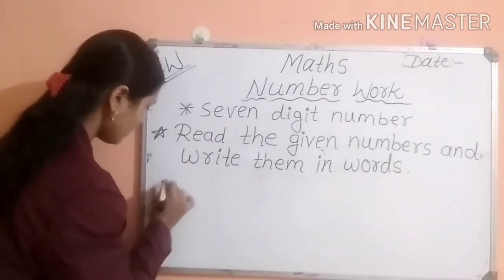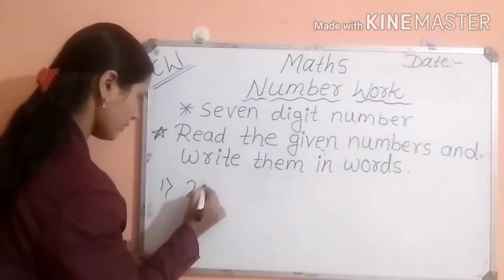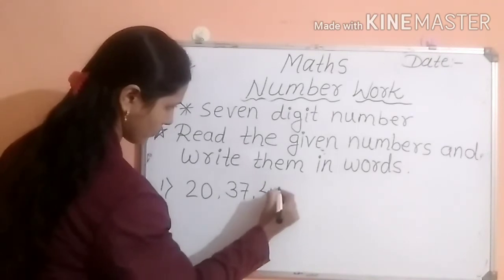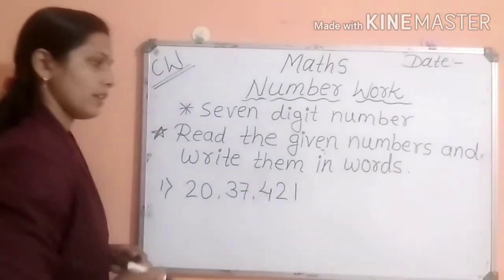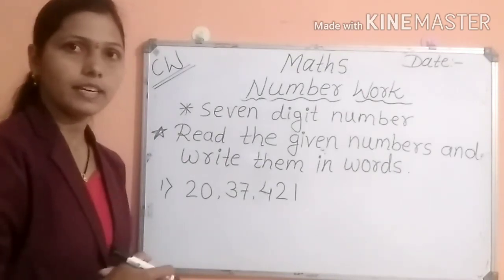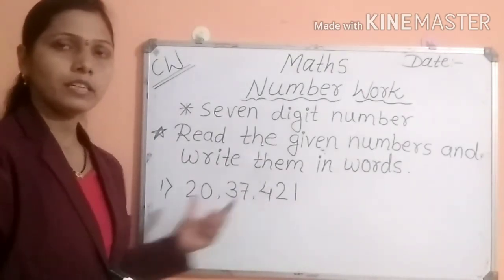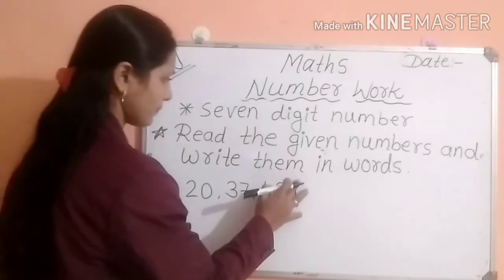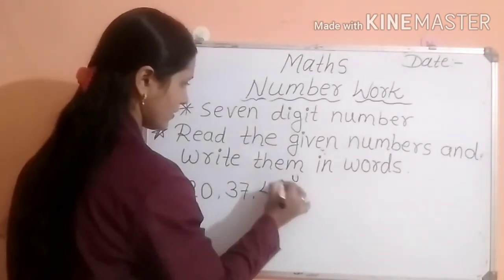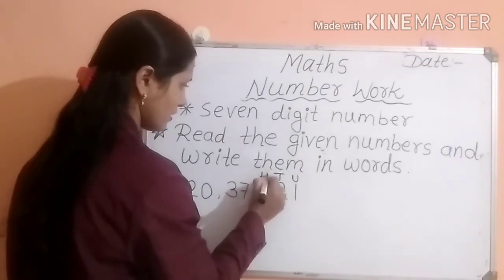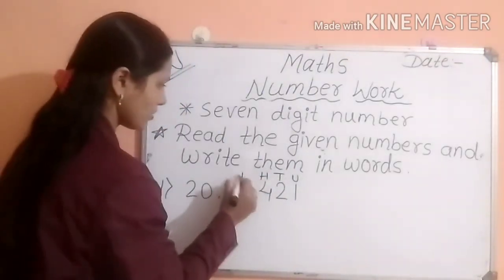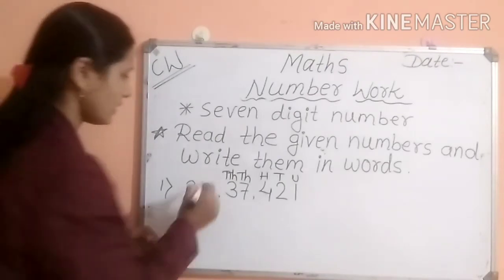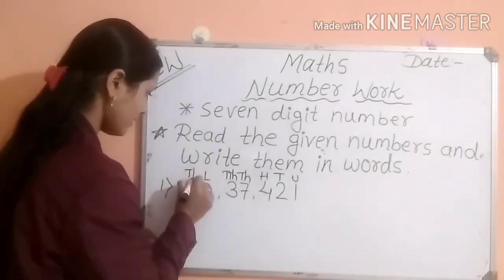I will give you one example. See, a seven-digit number is there. First, we have to know and mention its places: units, tens, hundreds, thousands, ten-thousands, lakh, ten-lakh.